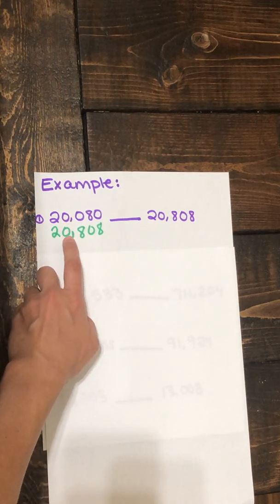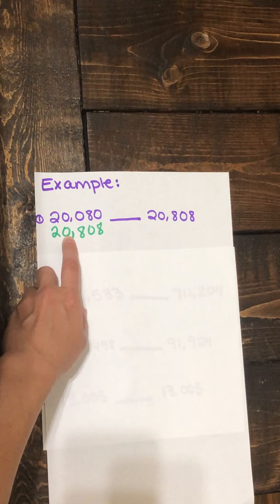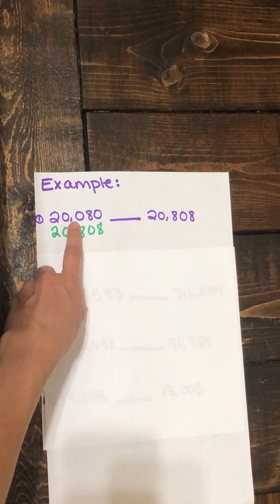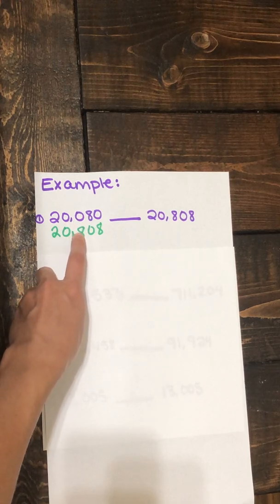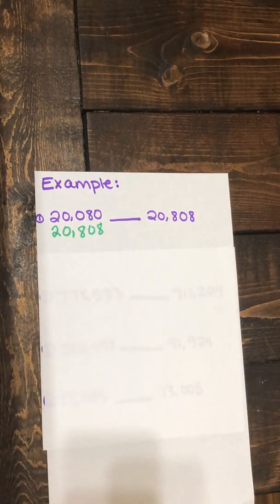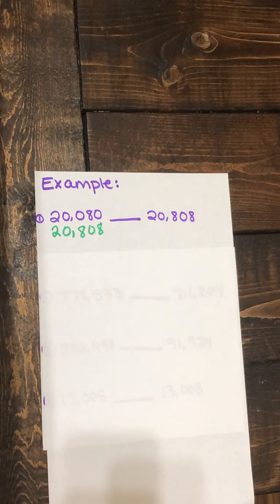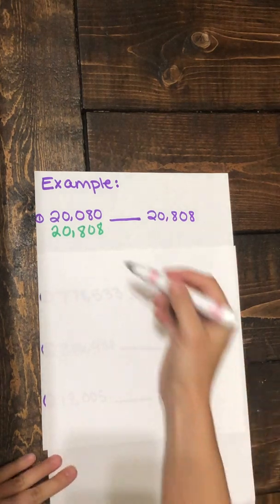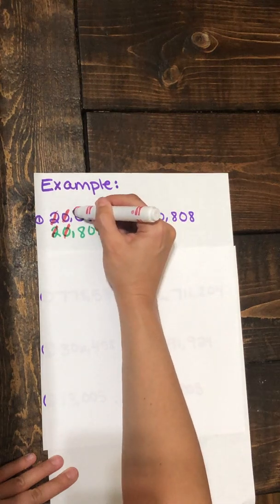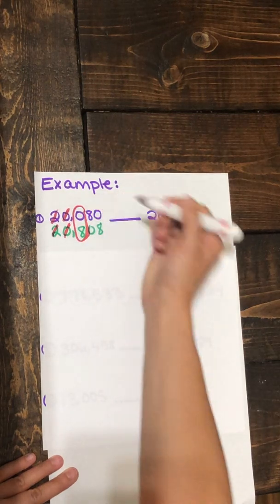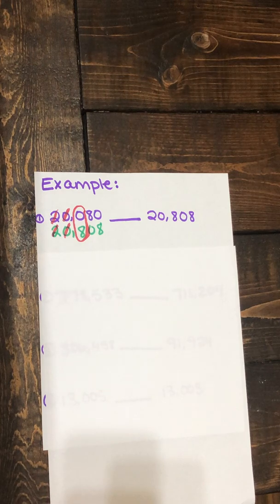We have a zero and a zero. Still not going to help us. Now we have a zero and an eight. Now these two numbers are different. So let's stop and think which one has a greater value. These didn't help us. So does the zero or the eight have a greater value? And we know that the eight has a greater value.